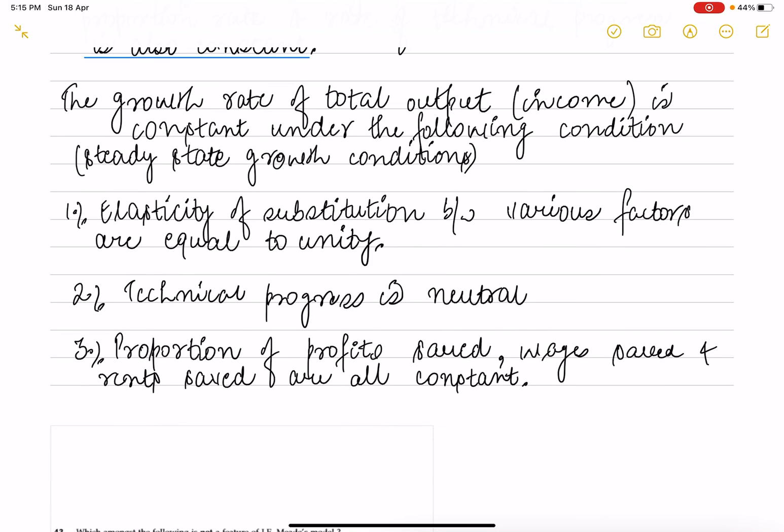First is elasticity of substitution between various factors is unity. Second is technical progress is neutral. Third, the proportion of profit, wages, and rent saved are all constant.